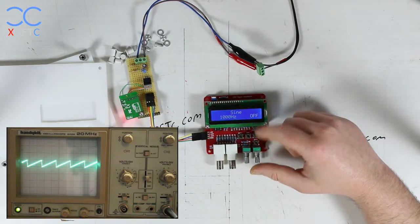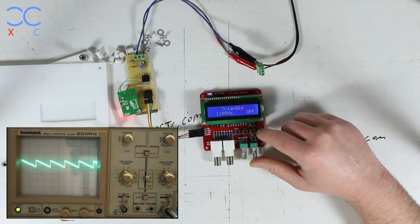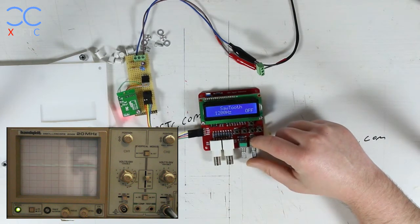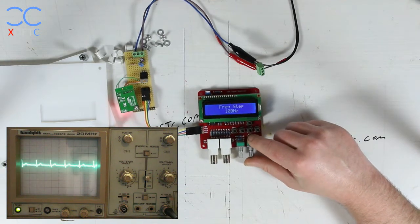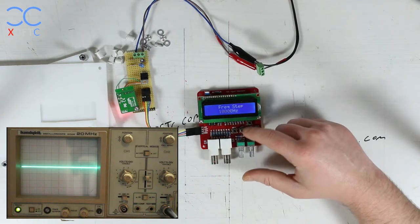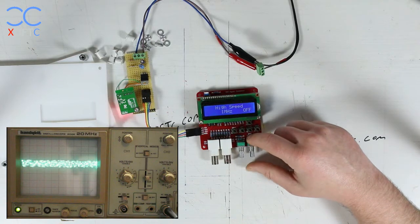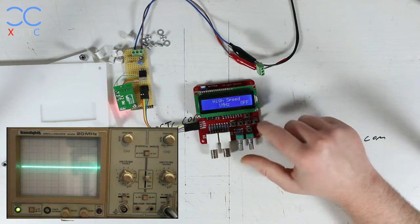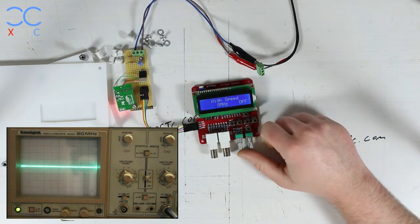Just gonna share with you the menu that you get. So we get a sine wave and we get a square, triangle, you can play with the speed, sawtooth, reverse sawtooth, ECG. The frequency step so we can increase it from one to ten thousand, just random noise. And this is the high speed which comes out of this output and it goes up to eight megahertz like that.